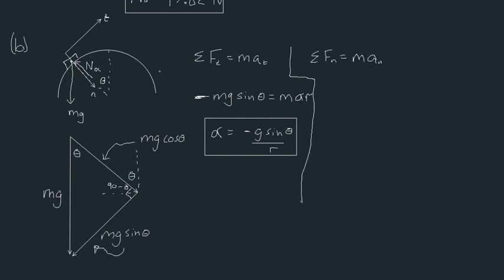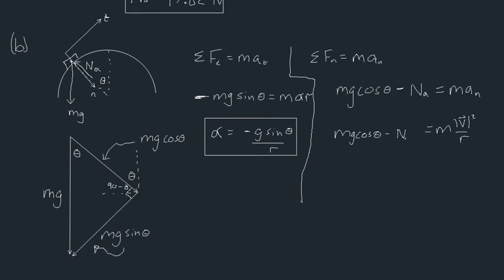Now for the normal direction forces: the component of gravity towards the normal direction is mg·cosθ, and the normal force Nₐ acts away from it. So mg·cosθ − Nₐ = m·aₙ = m·v²/r.